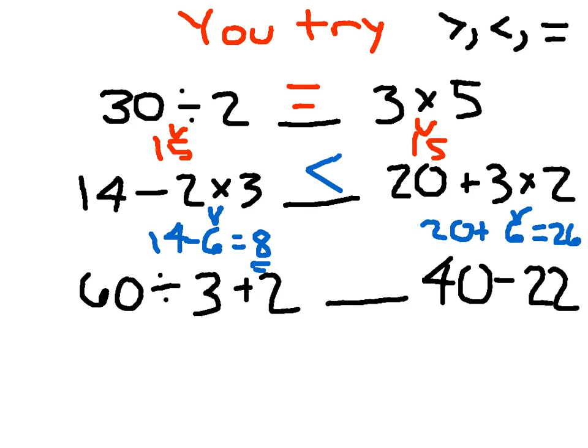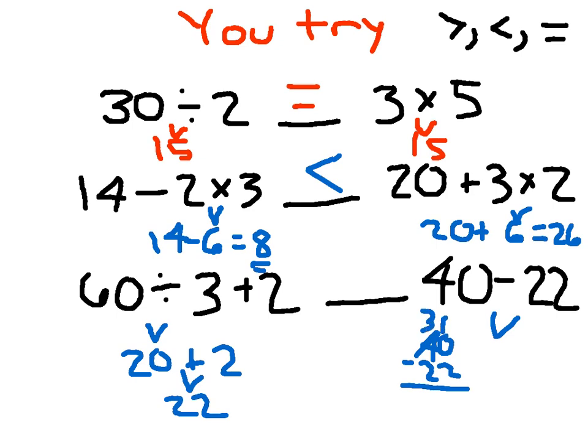60 divided by 3 plus 2. We have to do the 60 divided by 3 first, which is 20, plus 2, which is 22. The other side of the equation, 40 minus 22. Again, if you need to write things up and down to be able to solve them, then go ahead and do so. And do what it is that you need to do to get the correct answer.